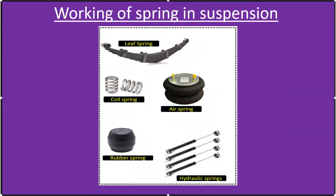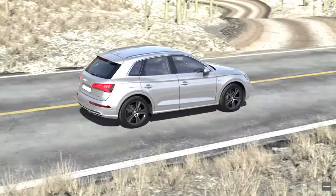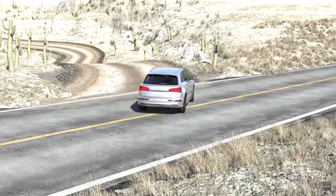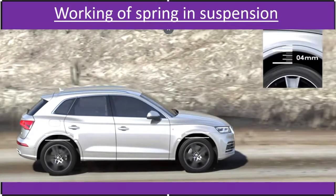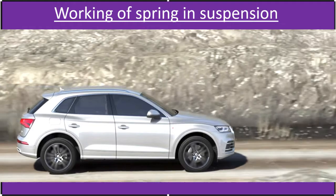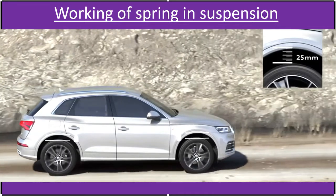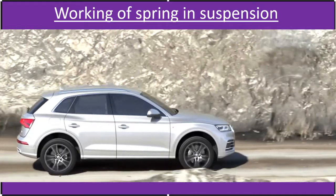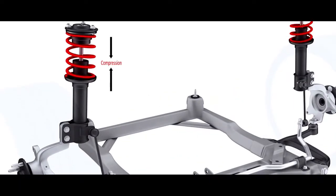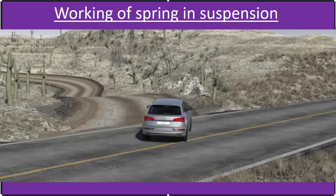Working of springs in suspension system. Springs are mechanical devices typically used to store energy and subsequently release it. They are connected to the wheel by standard arrangements. While driving through bumps and ditches, when the vehicle starts passing a bump surface, its wheels move upward and the spring attached to the wheel is compressed. As the vehicle comes down from the bump surface, the suspension spring starts expanding. This compression and expansion allows the vehicle to remain steady at a level from the road.